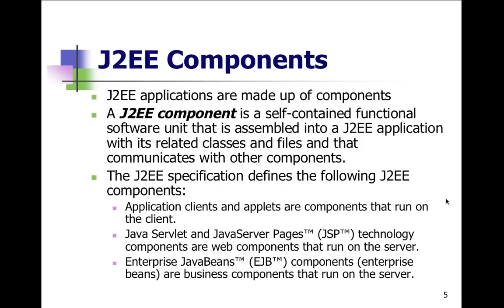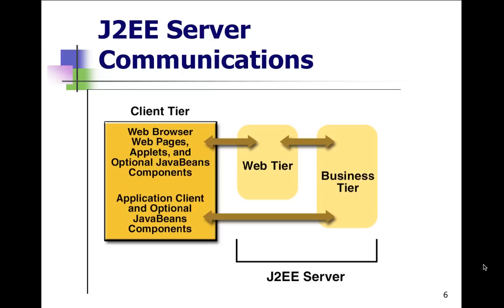Here's the Java 2 EE server communications. We have our webpages or applets and optional bean components on the client tier. The application client and optional bean components communicate with the business tier and the web tier. The bean components are sort of the worker bees of the system — they're the glue that puts things together and accesses resources across the tiers.